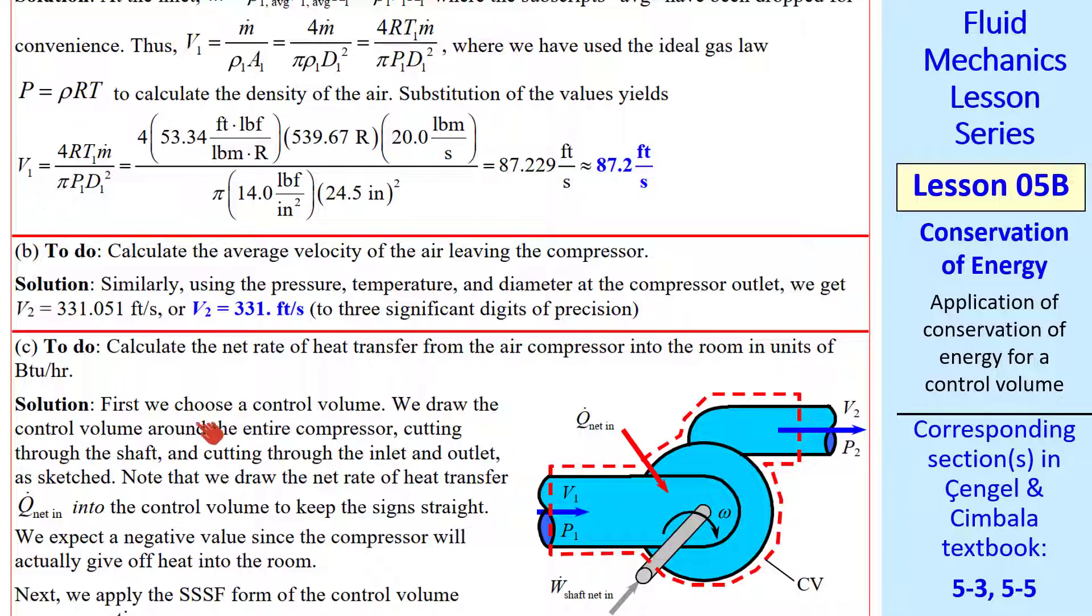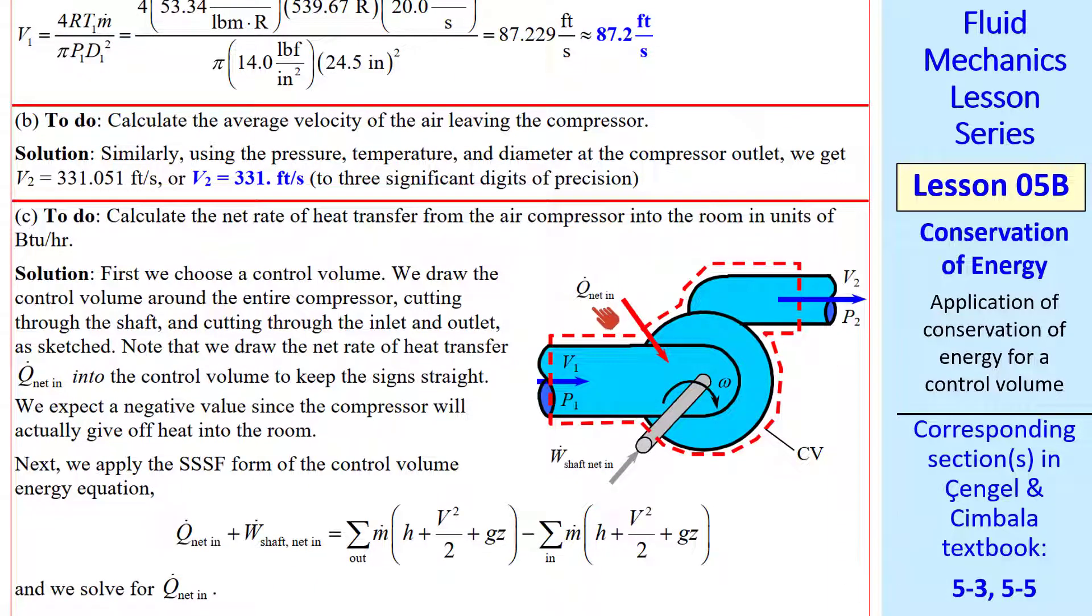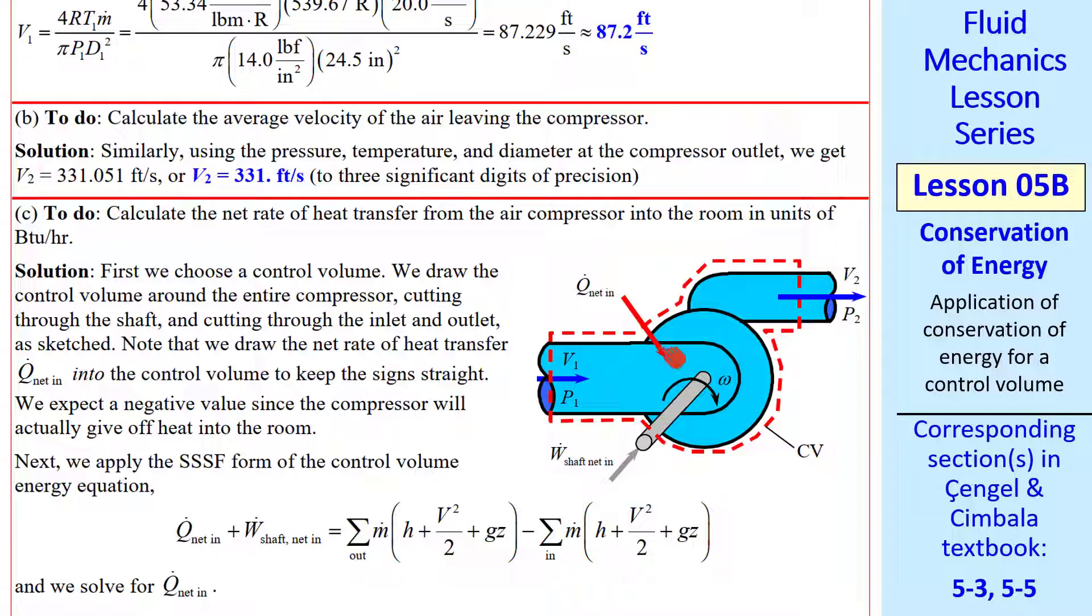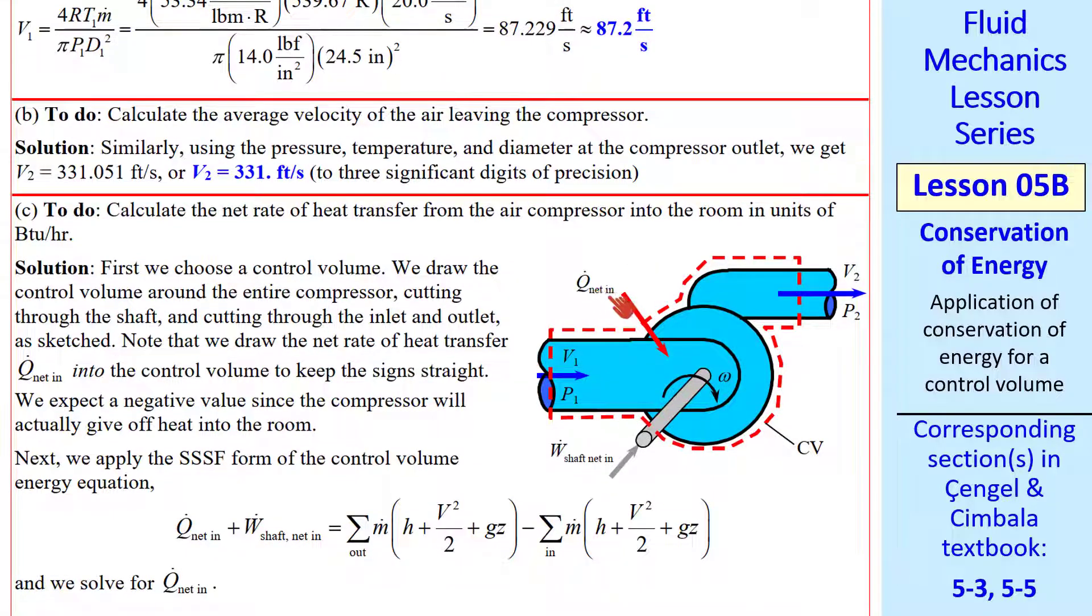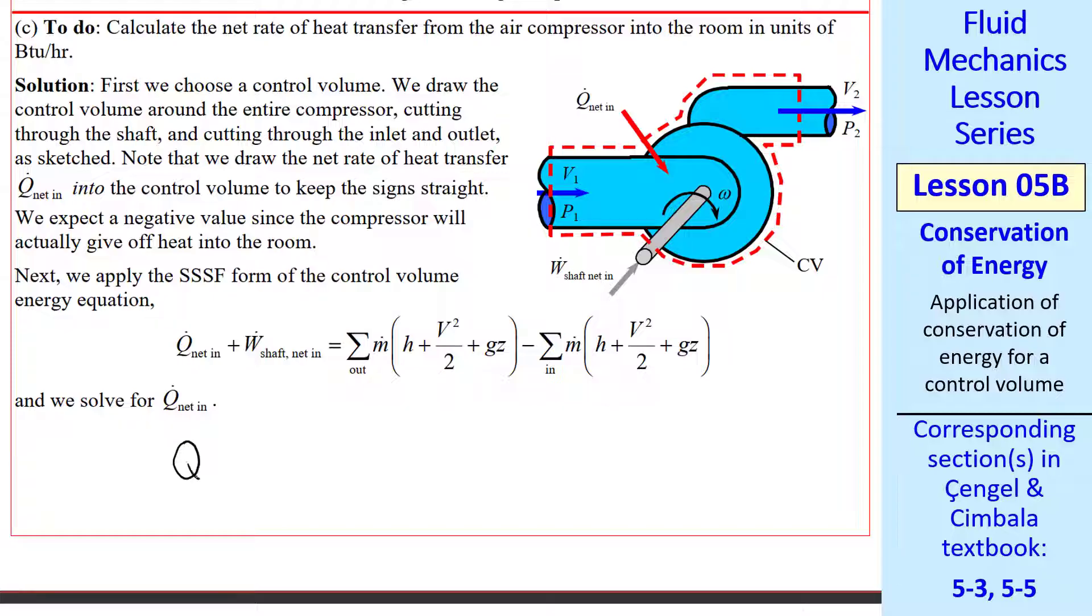The first step in any control volume analysis is to choose a wise control volume. In this case, we want to slice through the outlet and the inlet. We definitely want to slice through the shaft, but the rest of it can go around the entire compressor. From our sign convention, Q̇_net_in is the heat transfer into the control volume. But we know that since we're adding power and this thing has inefficiencies, there will be heat loss from this turbo machine. So Q̇_net_in will be negative. We apply our SSSF equation, and we want to solve for Q̇_net_in.